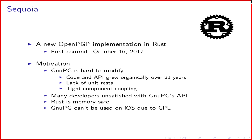The GNU-PG project itself is now 21, almost 22 years old. The code has grown organically. There aren't that many unit tests, and one thing we observed is that there's a lot of tight component coupling. Talking to developers, we've discovered that GNU-PG's API isn't so easy to use. They're unsatisfied with it — it doesn't do exactly what they want, and they end up writing a lot of code to work around GNU-PG's idea of how things should be done.